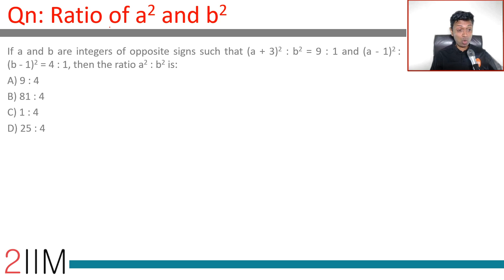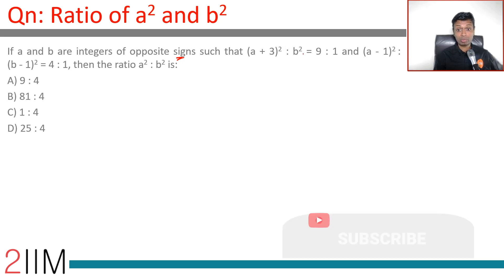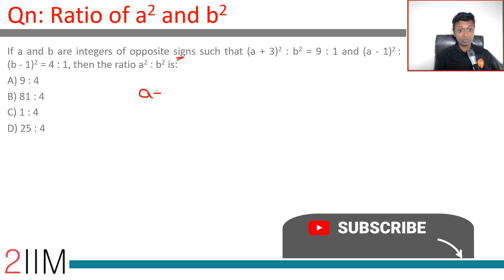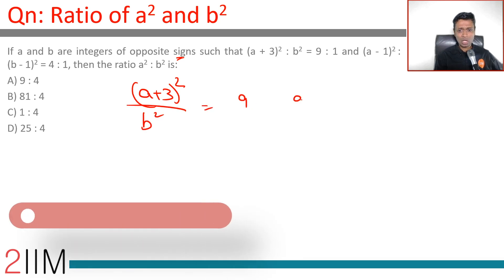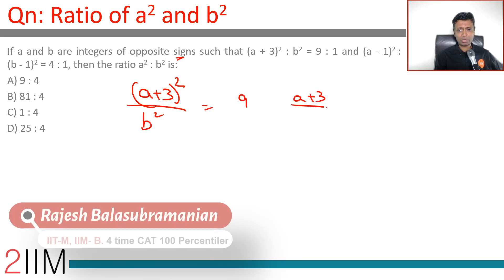The ratio of A squared to B squared is a wonderful question. A and B are integers of opposite signs such that (A+3)² : B² = 9 : 1. So (A+3)² / B² = 9, which means (A+3) / B = ±3.